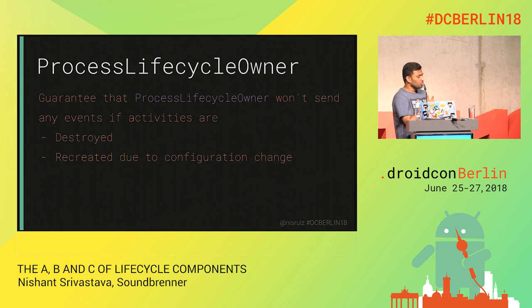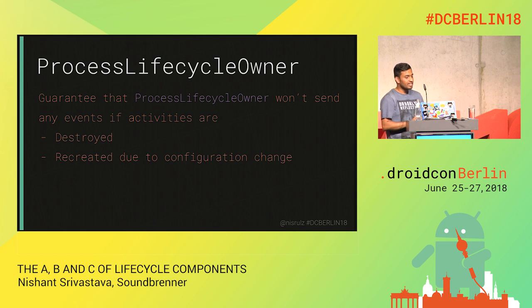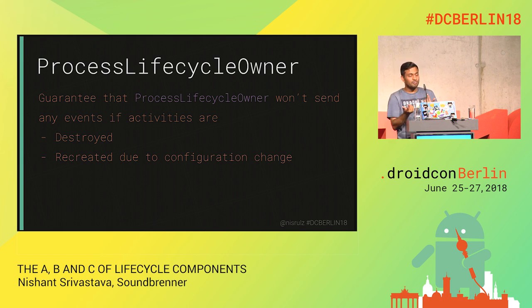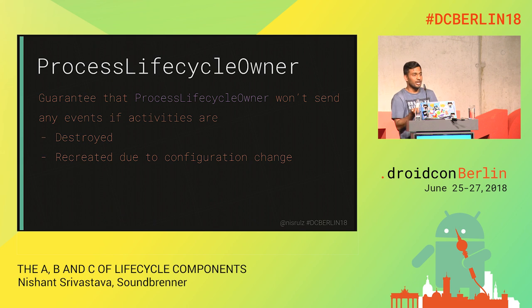Why use ProcessLifecycleOwner with this delay? The delay guarantees that ProcessLifecycleOwner will not send any events if activities are getting destroyed or recreated due to configuration changes. For example, if you open an activity, close it, and open another at the same time — if more than 700ms passed and the other activity hadn't started, the process tracking would be wrong. ProcessLifecycleOwner wants to track all activities together, so the delay ensures activities opening one after another are not tracked individually. After 700ms with no new activities, it tracks the onPause and onStop states.